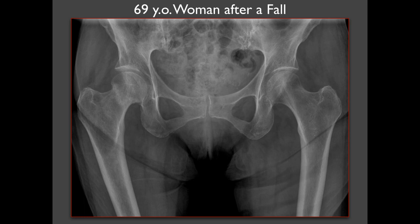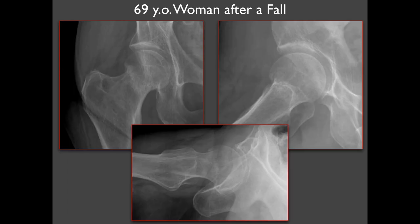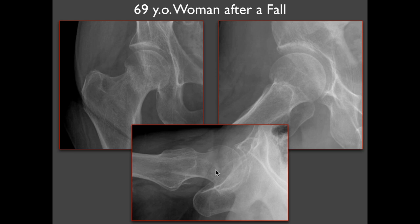Here's a 69-year-old woman after a fall. Take a look for an asymmetry that might be a fracture. Focusing on the right hip, you can see a band of sclerosis that's not present on the opposite side. Another feature to look for is discontinuity of the femoral neck. On the frog leg lateral view you can see the femoral neck and then an acute angulation where the fracture is. On the true lateral view there's a little offset of the femoral head with the neck — the fracture is coming across like so.